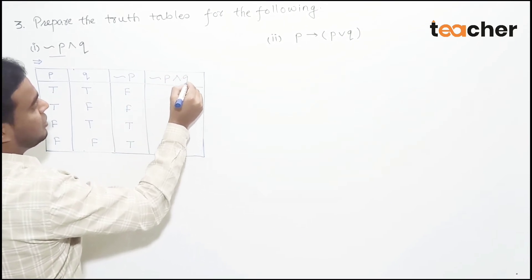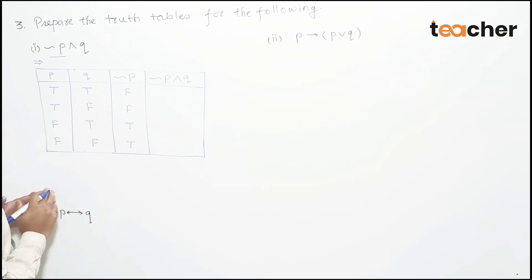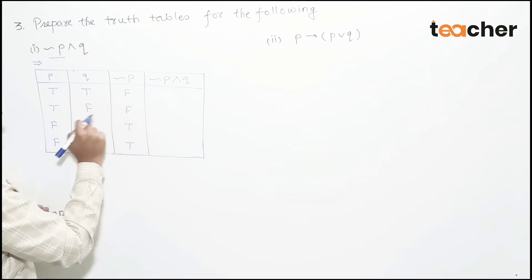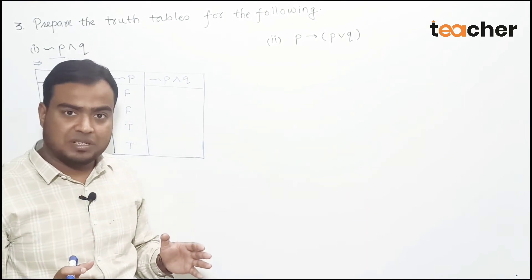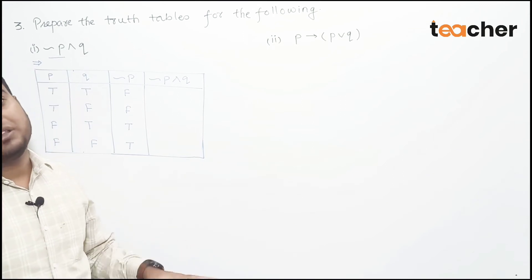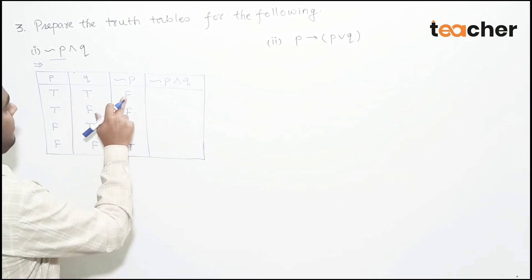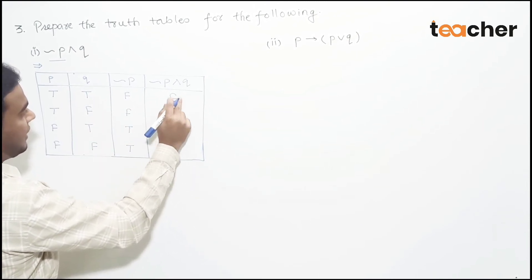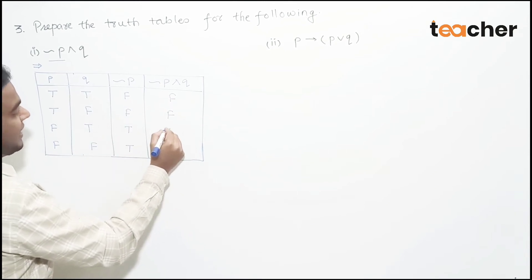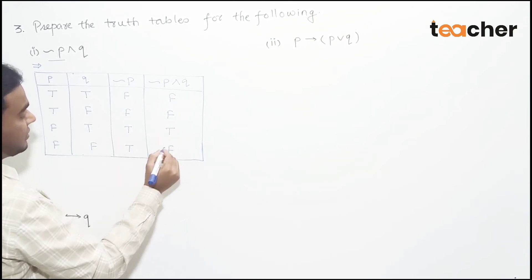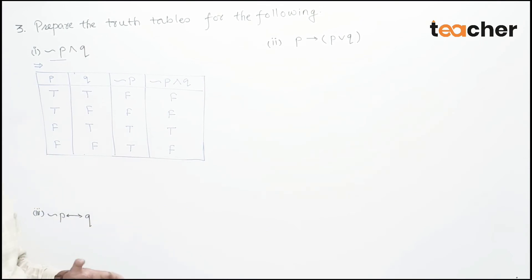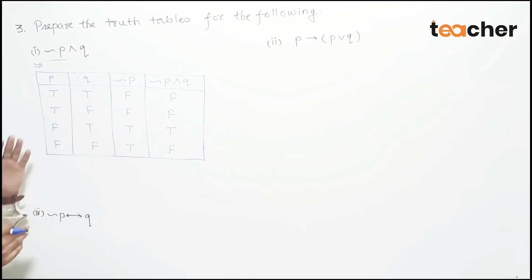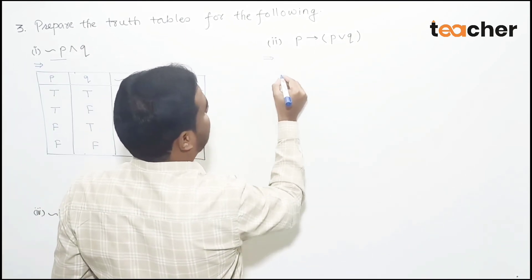Now we compute the column for negation of P conjunction Q. For conjunction, the result is true only when both values are true; otherwise it is false. So all rows where both negation P and Q are true give true; all others give false.